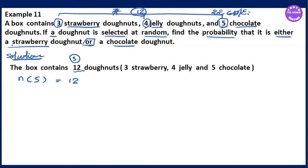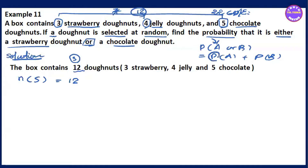It becomes the probability. These are the probability of the combined event. So, the formula is P(A or B). The probability of A or B is P(A) plus P(B).